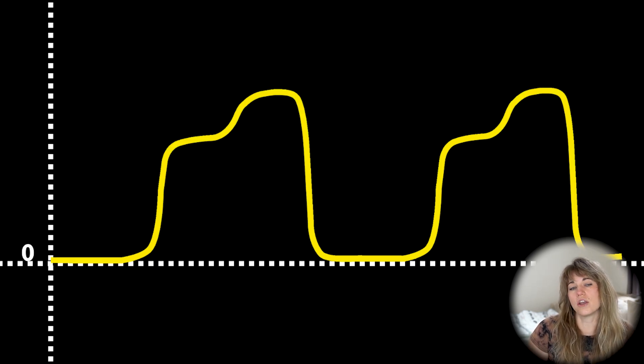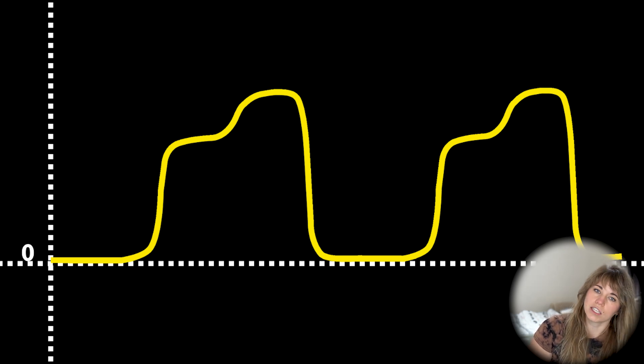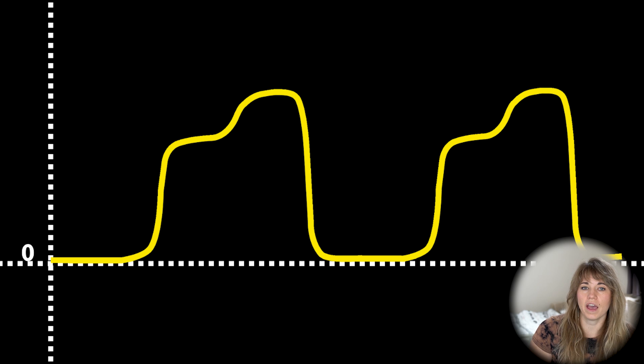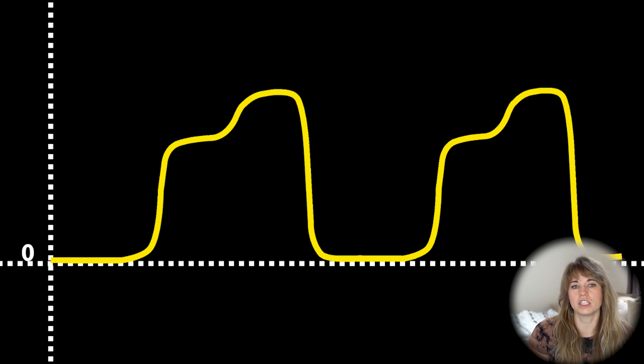An uncommon waveform is seen with endobronchial intubation or single lung intubation, where the endotracheal tube has been pushed too deep and is seated in one lung. The intubated lung will empty quickly while the non-intubated lung empties more slowly, producing a characteristic waveform. This is really common in patients intubated during a code, because intubators often push the tube in as deep as it goes before securing it. So if you have a post-code patient, it's really important to check tube depth.